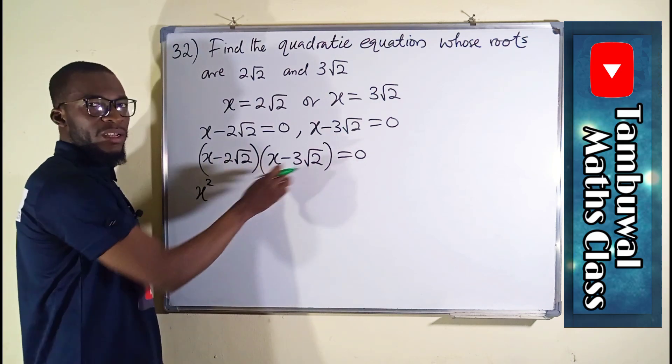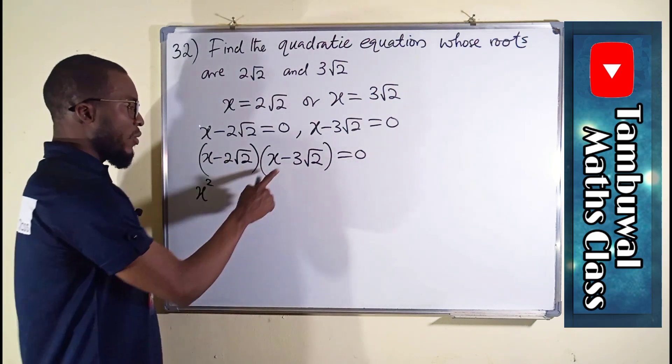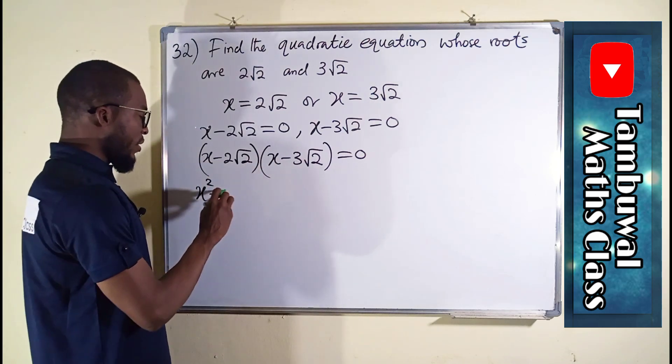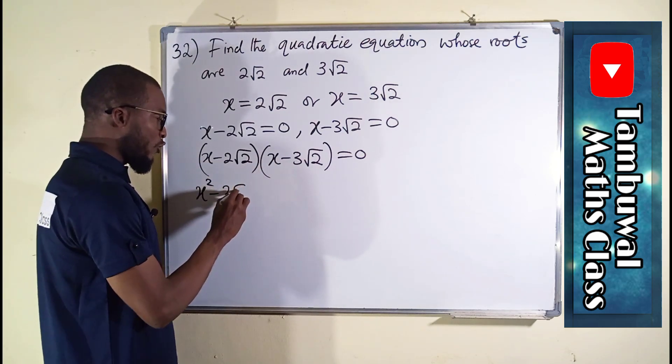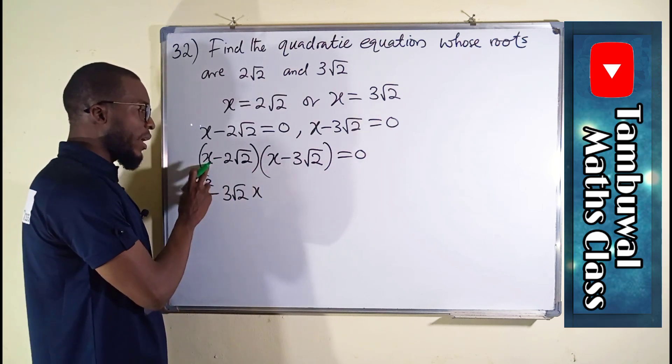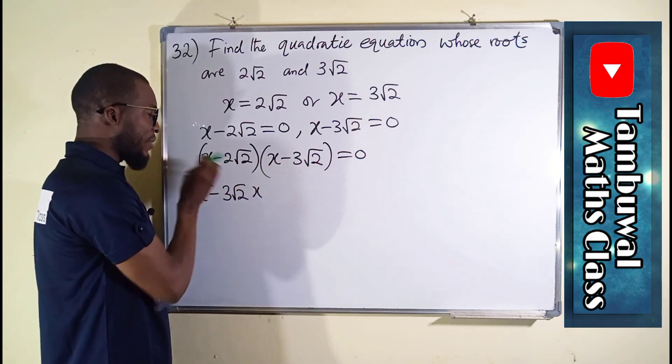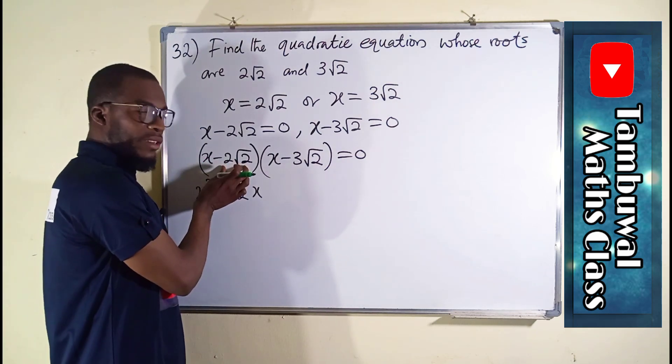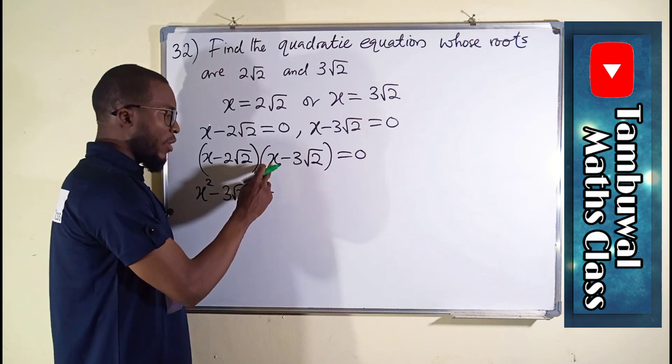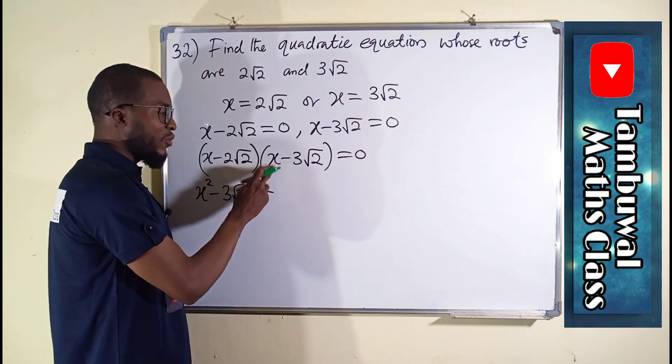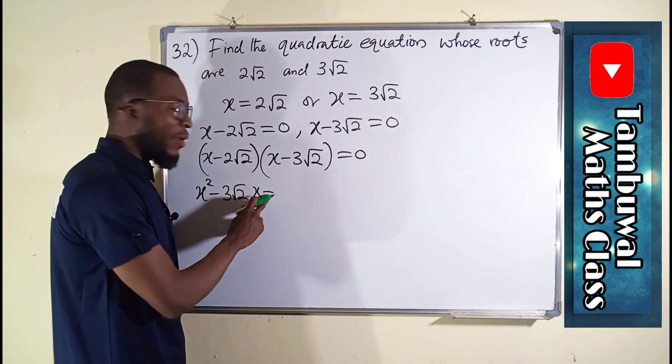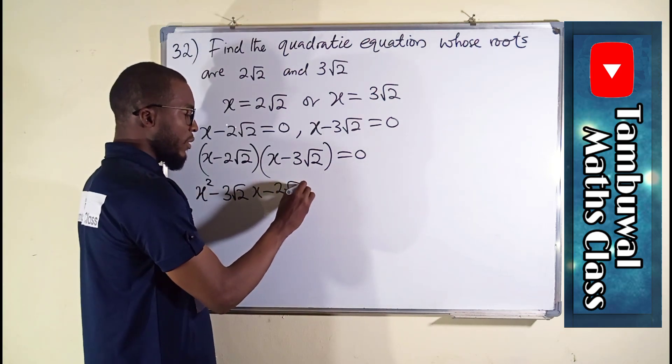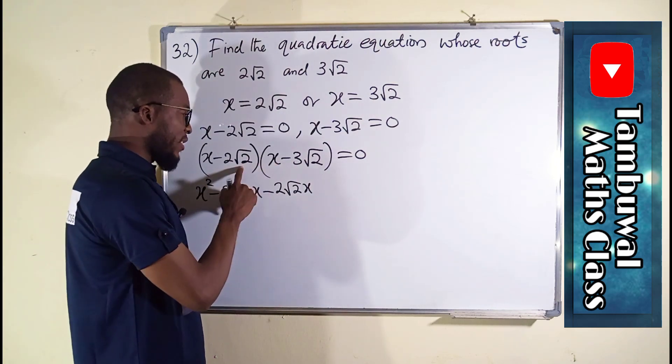Again, you take it, you multiply it with the second term on the other parenthesis. Already, we have minus sign here, so it's here again. Again, 3√2x, we are multiplying by x. So the whole of this times x. We are done with the first term here. Then we move to the second one. It contains negative sign. We are going to multiply it with this because this one is positive, so negative will overpower.